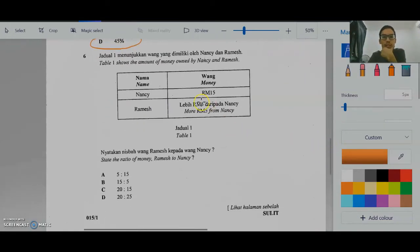Number 6. The table shows the amount of money owned by Nancy and Ramesh. Nancy RM15. Ramesh RM5 lebih, lebih RM5 daripada Nancy. So, RM15 tambah 5 ialah RM20. Ramesh ada RM20. Nampak perkataan 2 ni maksudnya titik di tengah. Ramesh di kiri, Nancy di kanan. So, Ramesh RM20, Nancy RM15. The answer is C.